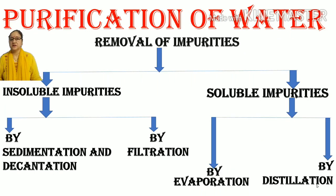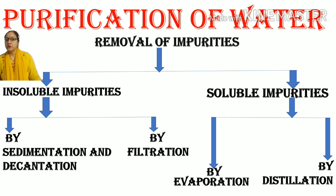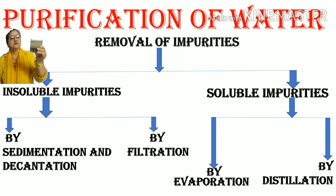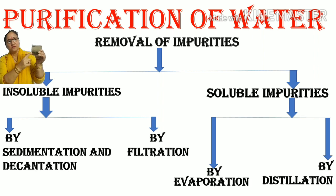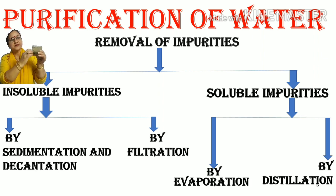Water that is fit for drinking is known as potable water. There are various methods to make water potable. There are two types of impurities: insoluble impurities and soluble impurities. In sedimentation, the sediments or soil which are insoluble in water settle at the base of the glass. When kept for a longer period, clear water can be seen just above the sediments. This layer at the base is known as sediment, and this process is called sedimentation.